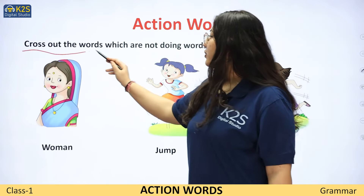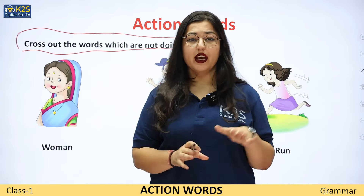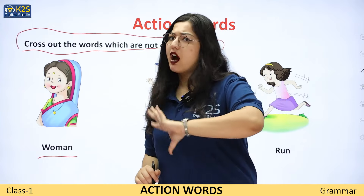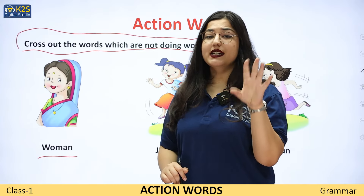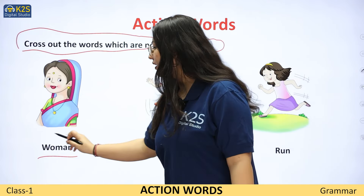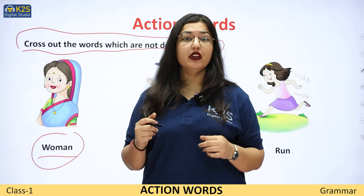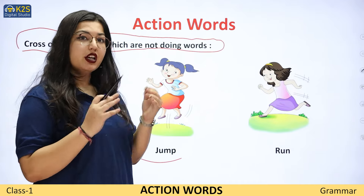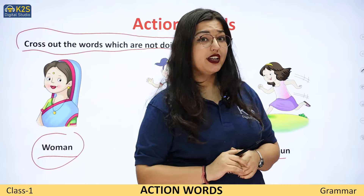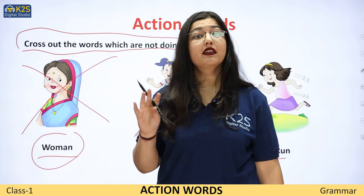Now, cross out the words which are not doing words. Aap ne woh words ko cross out karna hai which are not doing words. Woman — matlab it could be a noun, it could be a pronoun, but action word nahi hona chahiye. Woman kya hai? Woman ek action word hai? Nahi — woman ek noun hai. Jump — jump bhi ek action hai. Aur run — run bhi ek action hai. Toh woman toh action nahi hai, toh hum is word ko cross out kar denge kyunki woman ek noun hai.